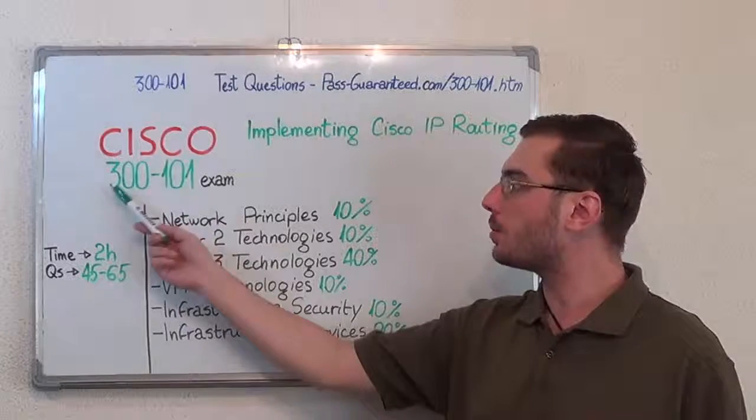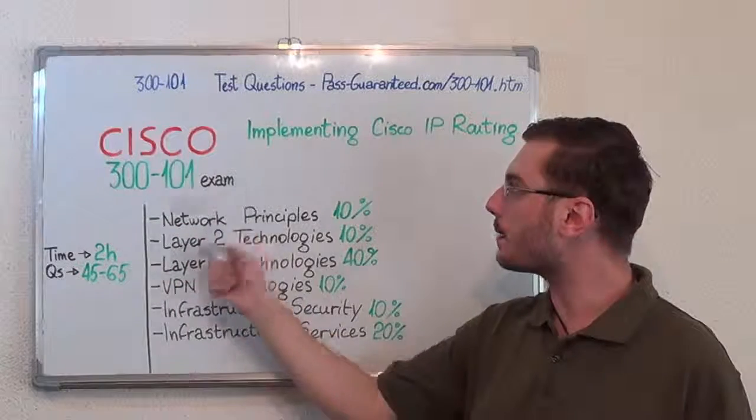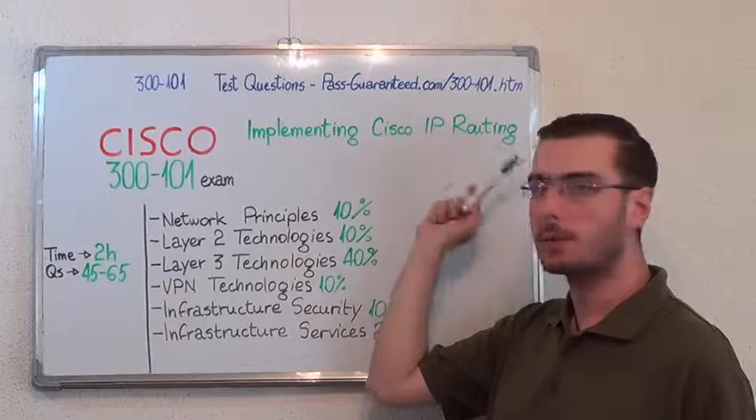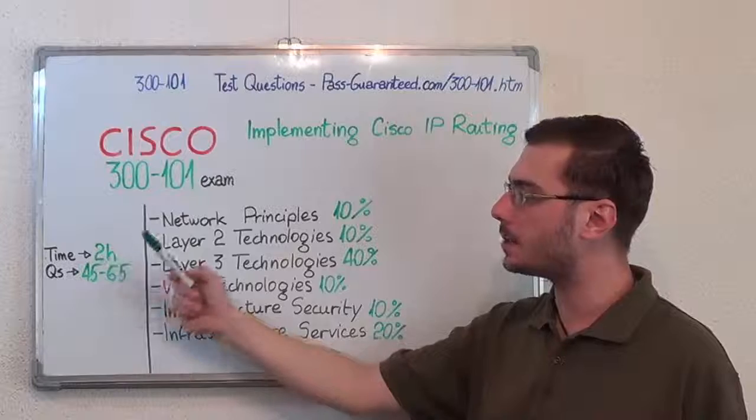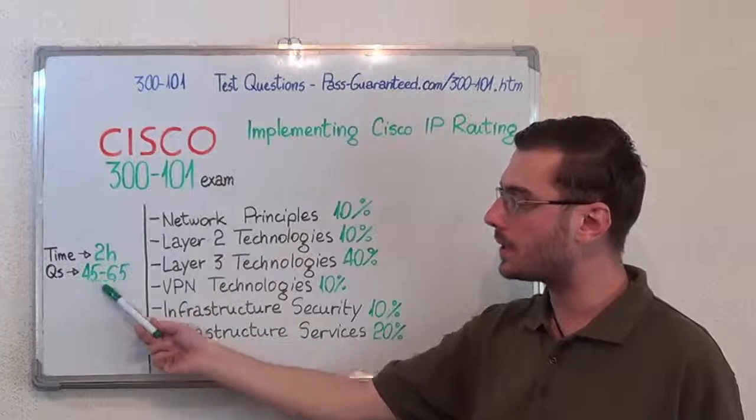Hello everyone, today I will present you the Cisco 300-101 exam implementing Cisco IP routing. Here we have some basic test information. The duration of this exam is 2 hours and there are between 45 to 65 questions.